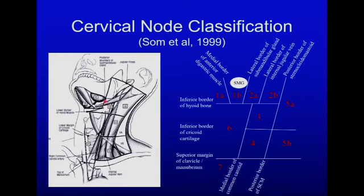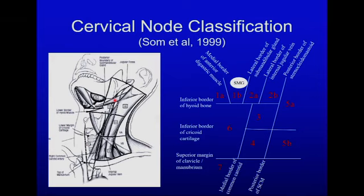An area of confusion in our ultrasound laboratory is lymph nodes in this area — are they level 1B or level 2? There is a fairly well-defined, easy-to-locate landmark to sort this out: the lateral-most aspect of the submandibular gland. If the lymph node or lesion is completely lateral to the lateral border of the submandibular gland, it is in level two. If it is not completely lateral to that border, it is in level one.